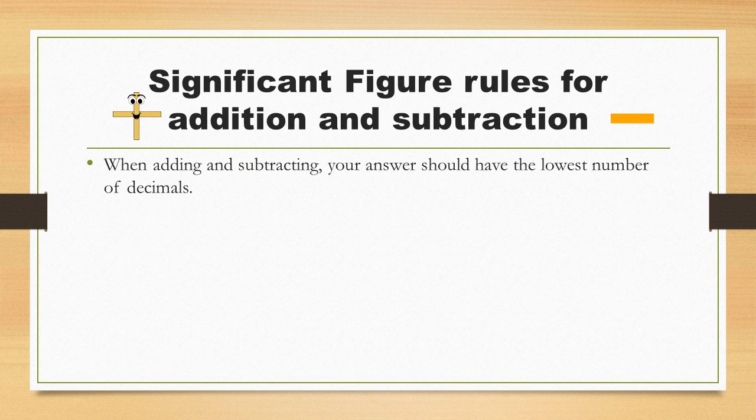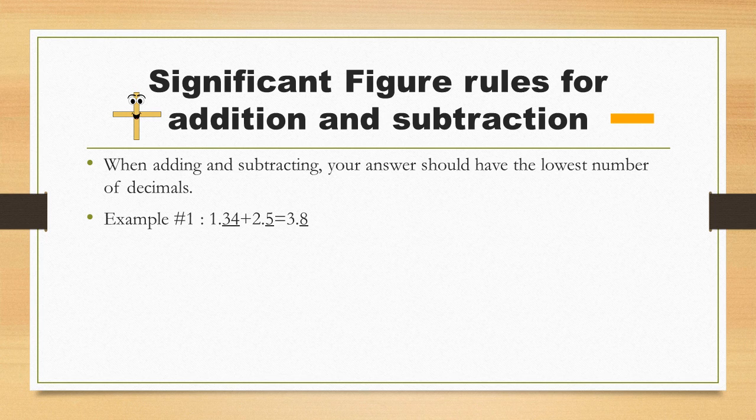Significant figure rules for addition and subtraction: When adding and subtracting, your answer should have the lowest number of decimals. Example 1: 1.34 plus 2.5 equals 3.8. To get 3.8 as an answer, count the number of significant figures in the decimal portion of each number in the problem.